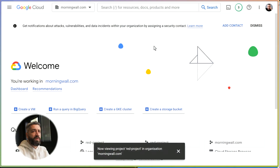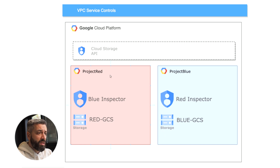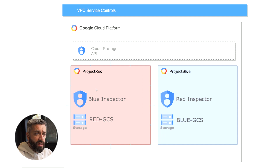Before starting with the hands-on part I want to show you the initial concept of VPC Service Controls using a few slides. For this demo I created two projects in Google Cloud: one called Red Project and one called Blue Project. Each of them has a service account. The Red Project has a service account called Blue Inspector because we want to inspect the resources in the Blue Project, and the Blue Project has a Red Inspector to inspect resources in the Red Project. I also created two buckets: Red GCS in the Red Project and Blue GCS in the Blue Project.